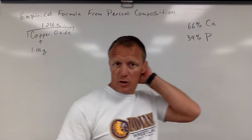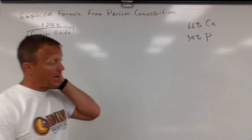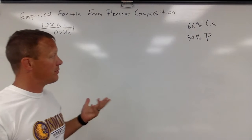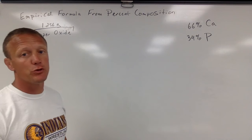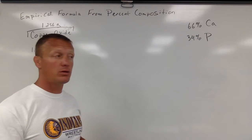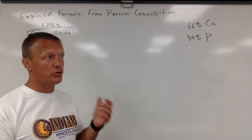This video is going to be on getting empirical formulas from percent composition or even just mass values. So we get the empirical formula, that's the most reduced form. It might also be the molecular formula, the actual formula, but it's always the most reduced ratio of the elements.